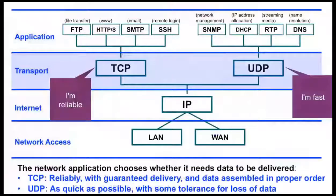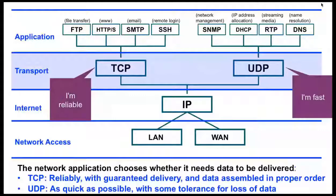To summarize, applications such as those that perform file transfers, downloading web pages, and email all use the reliable transport protocol TCP, whereas UDP is used for applications such as real-time video and voice, where speed is more important than reliability.